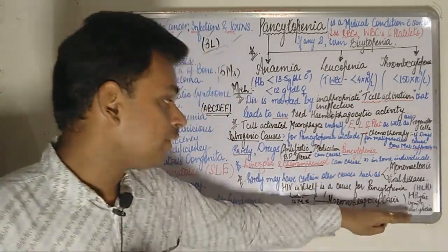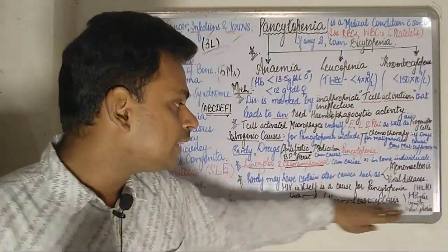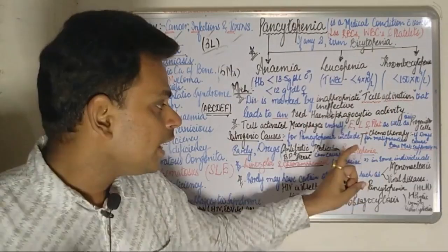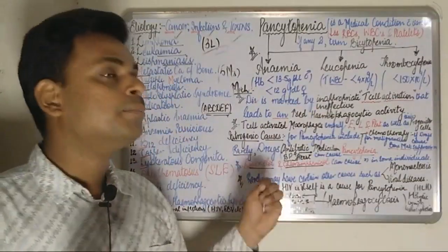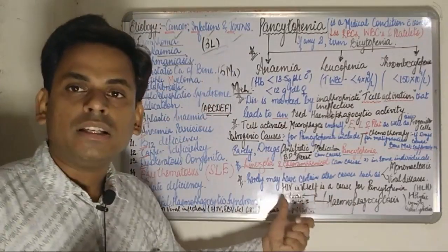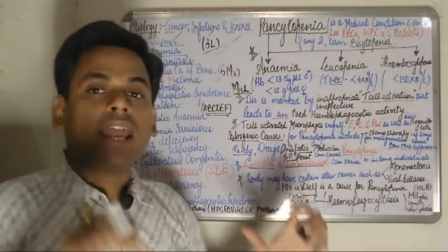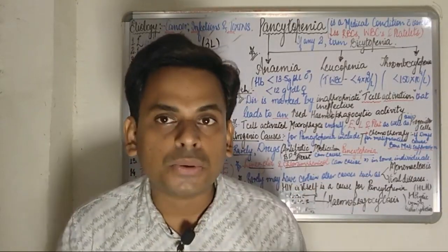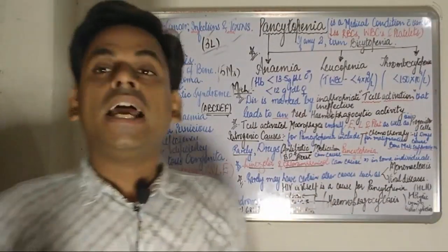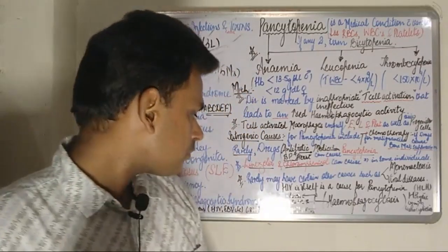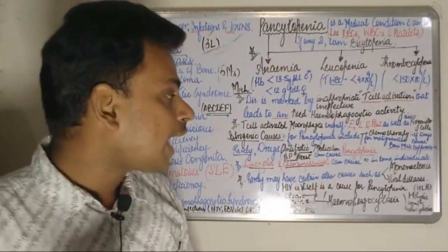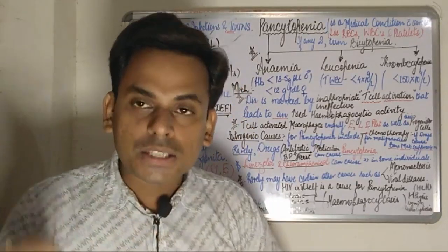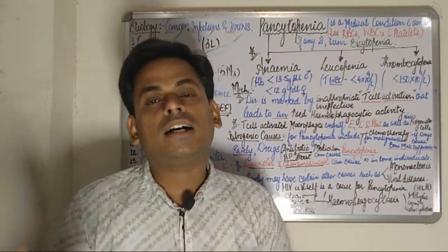One important point to emphasize: the phenomenon of hemophagocytosis, caused by inadequate or ineffective T-cell activation, mostly proceeds or occurs in the liver, the bone marrow, or the lymph nodes. There is a syndrome associated with this pancytopenia — it is the hemophagocytic lymphohistiocytic syndrome (HLH), in which pancytopenia is mostly seen.